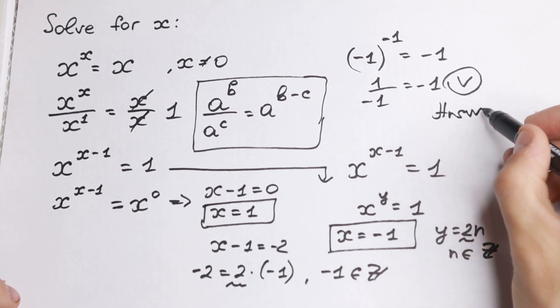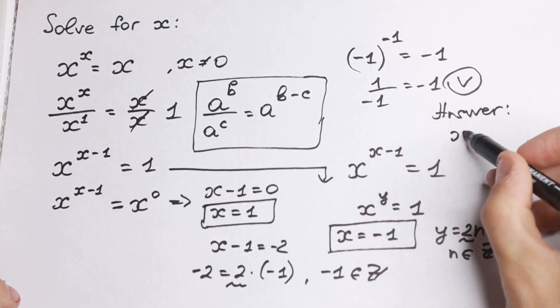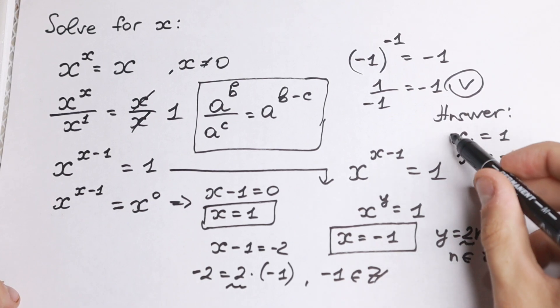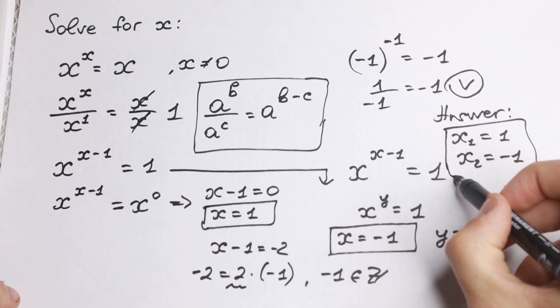So our answer: x first equal to 1 and x second equal to minus 1. These are our two answers.